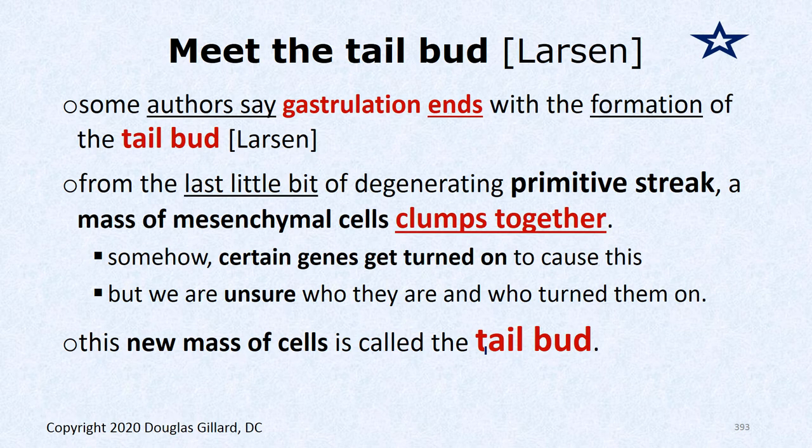We need to talk about the tail bud — we're not quite done with the primitive streak. Some authors like Larson say gastrulation ends once the tail bud is formed, while board books don't say that. As the primitive streak degenerates from cranial to caudal, the very last caudal remnant — almost like another primitive node — forms a mass of cells called the tail bud, located just in front of the cloacal membrane.